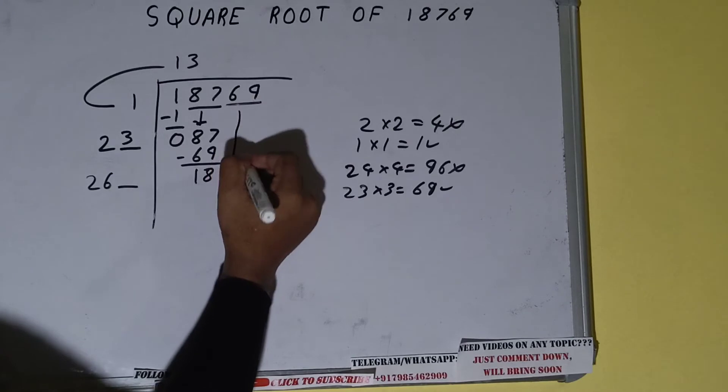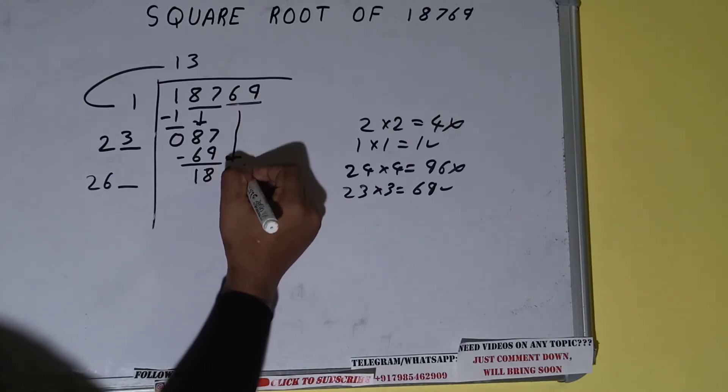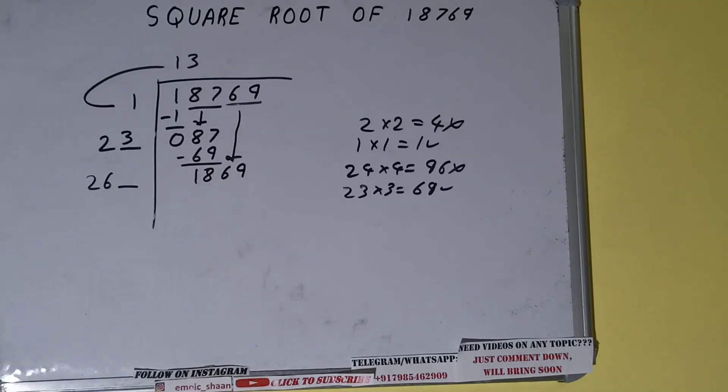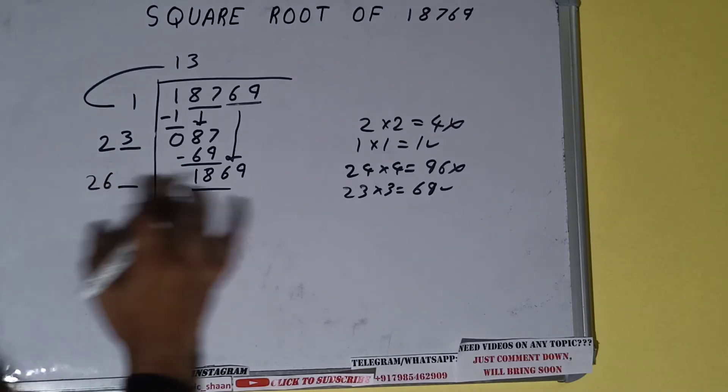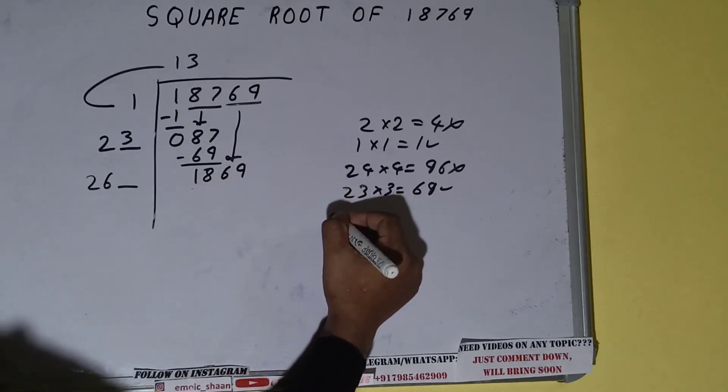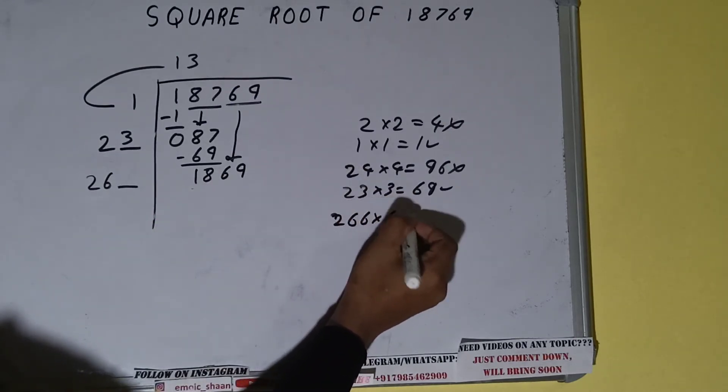Now we can compare this 26 with this 186. So 28 seven times is 196, so we cannot use 7 times. 28 six times is 168, so we can try 6 times. So 266 into 6 we can try.